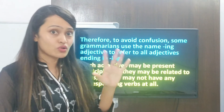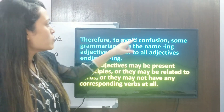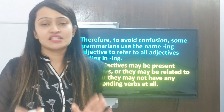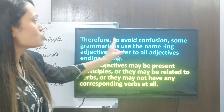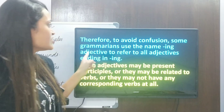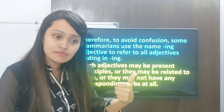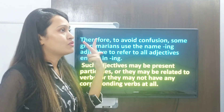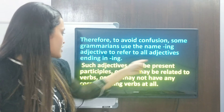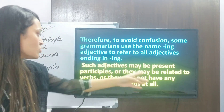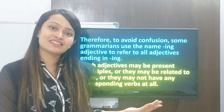Since there are so many exceptions, there can be confusion. Therefore, to avoid confusion, some grammarians use the name 'ing adjective' to refer to all adjectives ending in ing. It can be a present participle with a corresponding verb, or it can be without a corresponding verb — all those exceptions included. Such adjectives may be present participles, or they may be related to verbs, or they may not have any corresponding verbs at all. I hope present participle is clear to you.